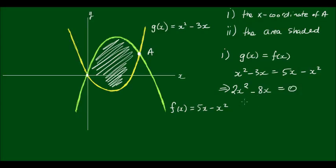And on the left-hand side, I can factor out a 2x, which will leave me with inside parentheses x minus 4 is equal to 0.